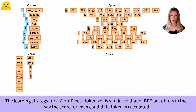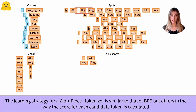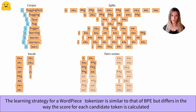We will list all the existing pairs in our corpus. Once we have this list, we will calculate a score for each of these pairs. As with the BPE algorithm, we will select the pair with the highest score.